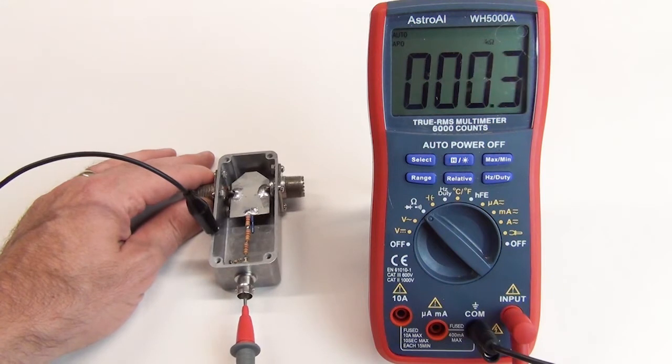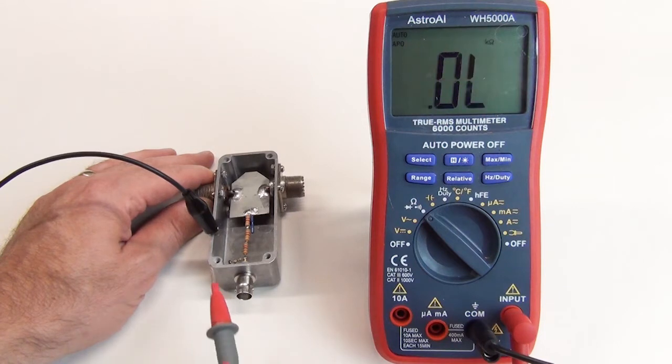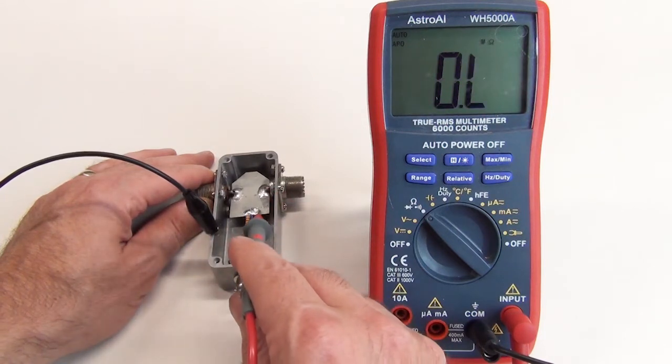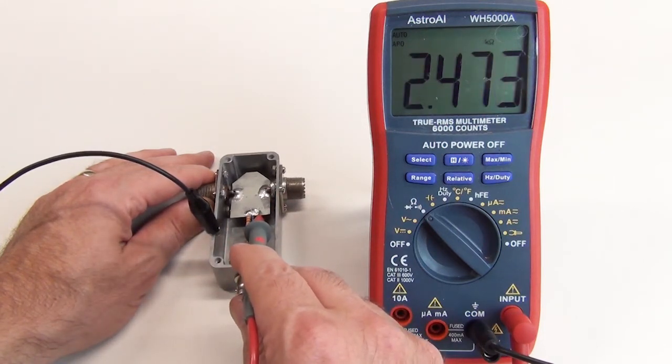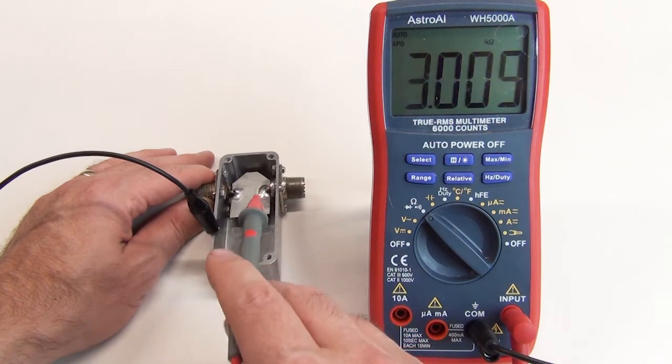The resistance from the BNC connector to ground should be 50 ohms, and it is. And the resistance from the brass strip to ground, which is all four resistors in series, should be 2.51K, and it measures 2.47K. That's within a couple percent, which jives with the 5% resistors I used, so we're good to go.